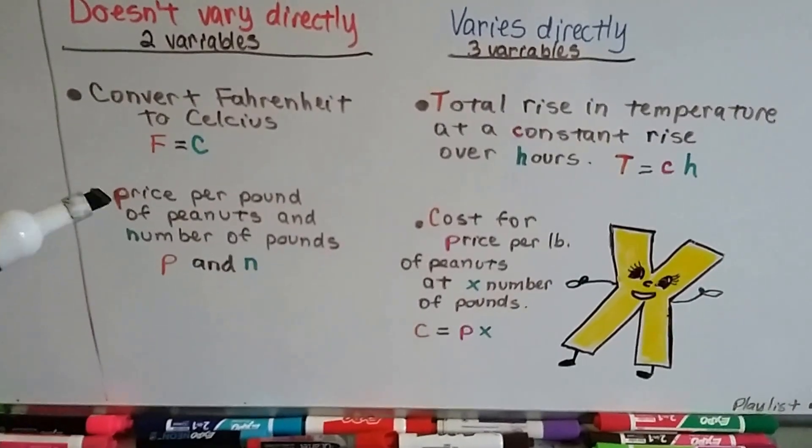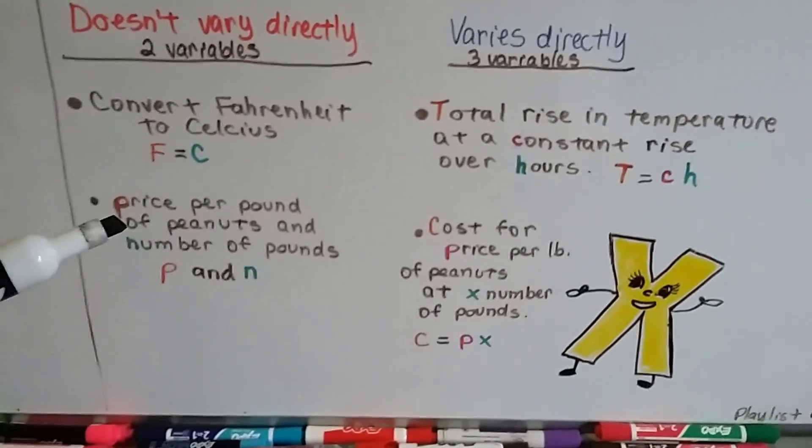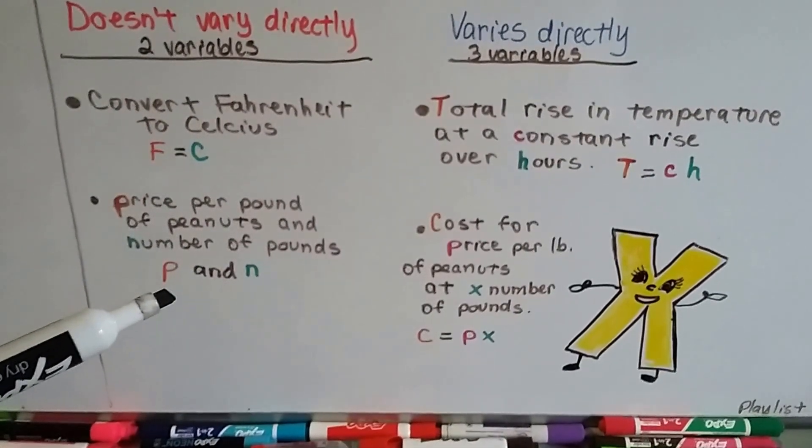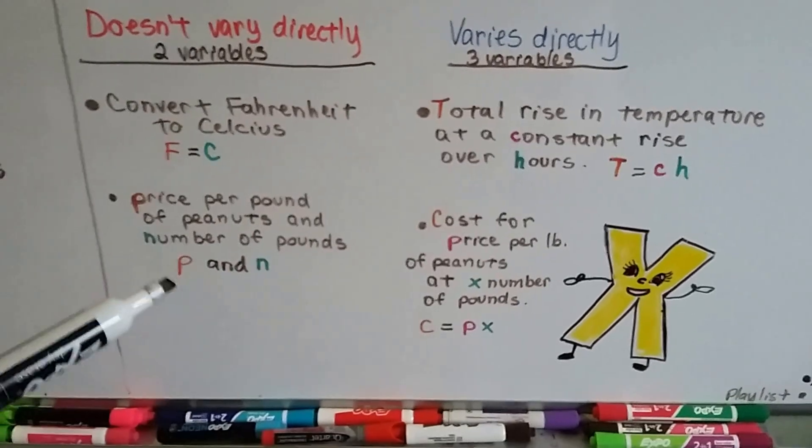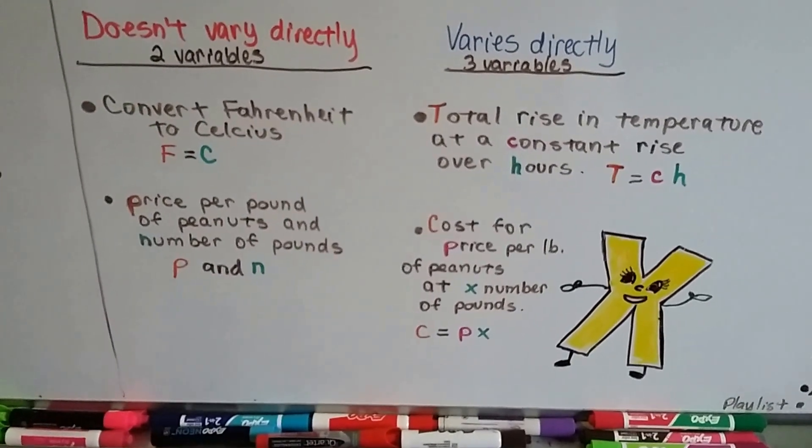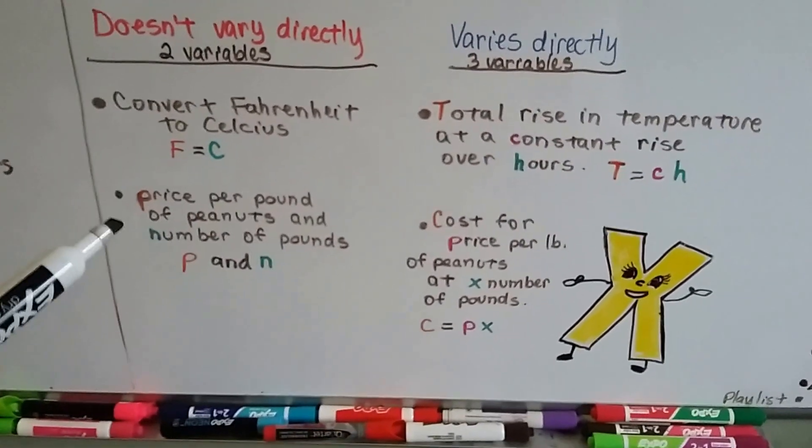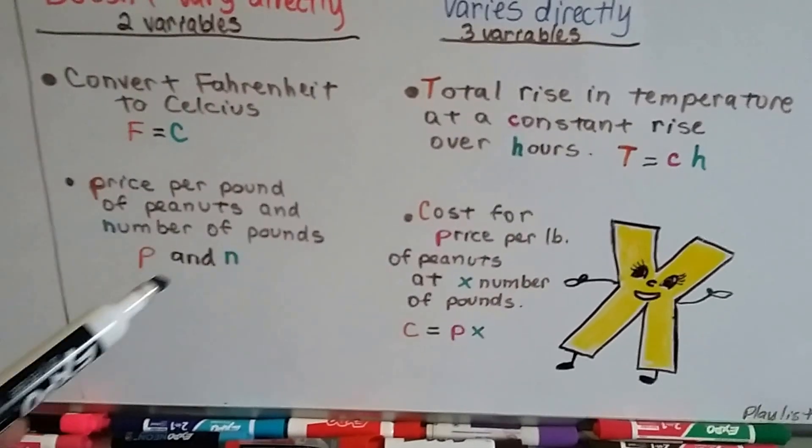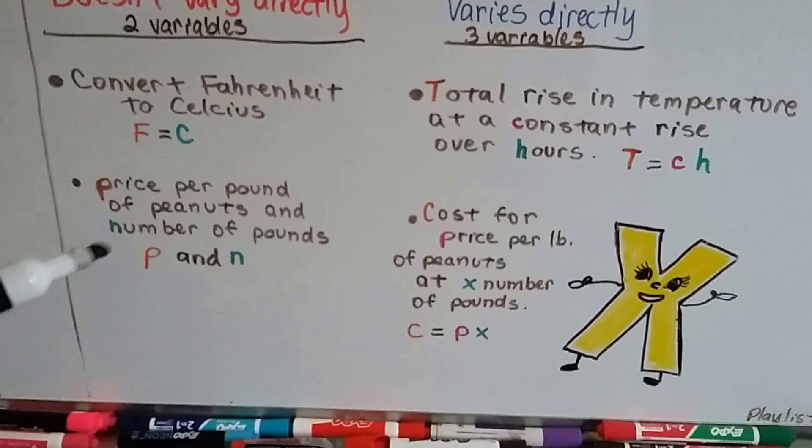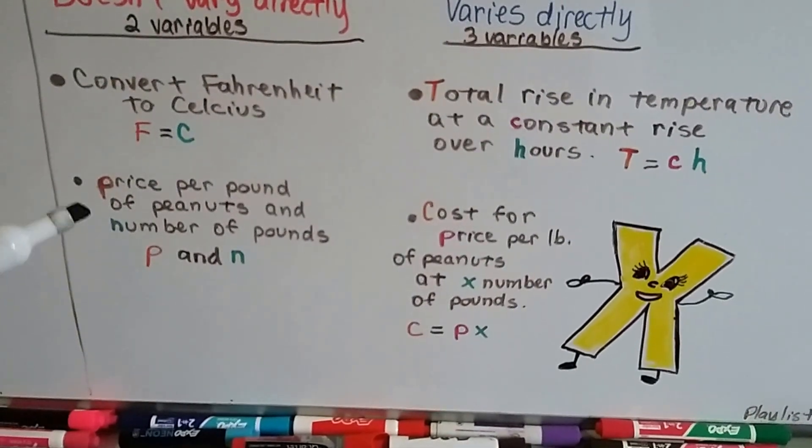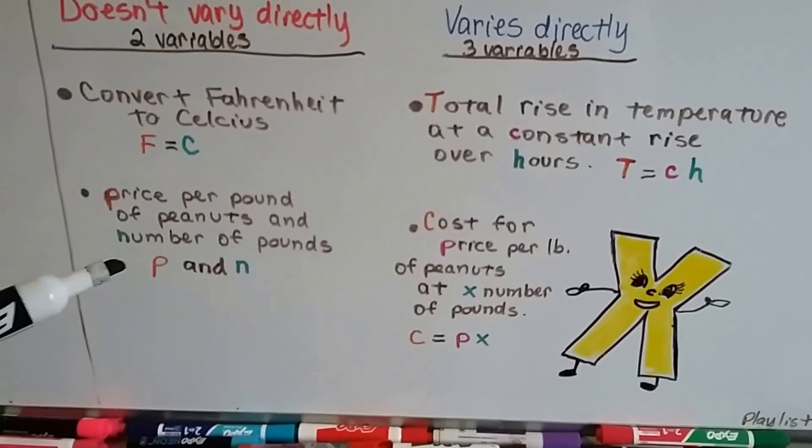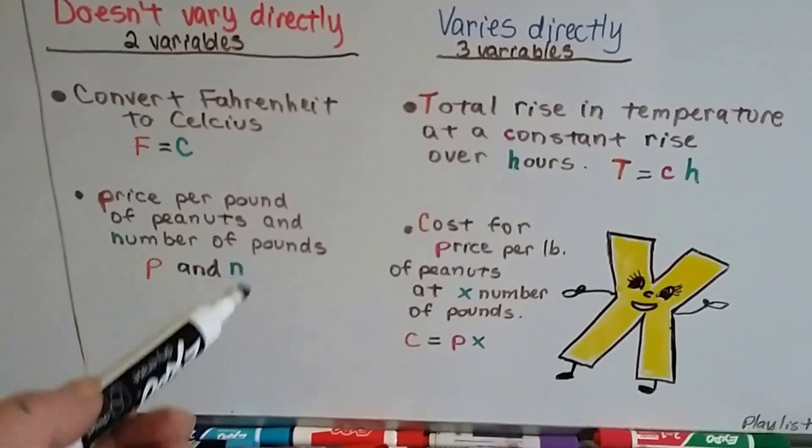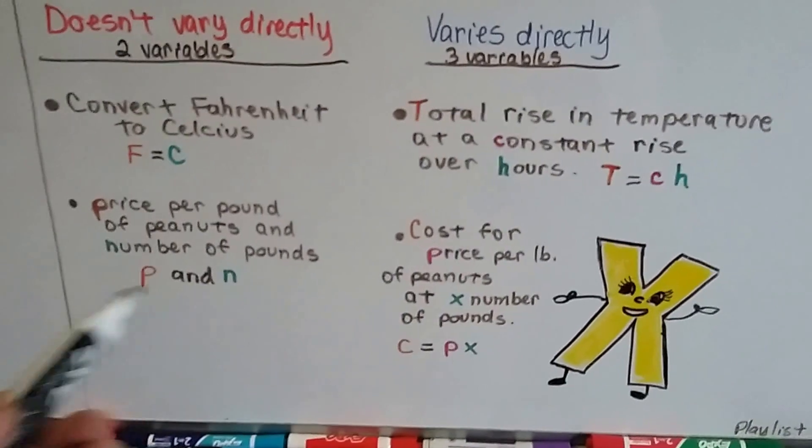If I said price per pound of peanuts, if peanuts were $2 a pound and I bought 4 pounds, it's not saying what to do with that amount. It doesn't say what's the total. It just says the price of the peanuts and the number of pounds. So that's just two variables.